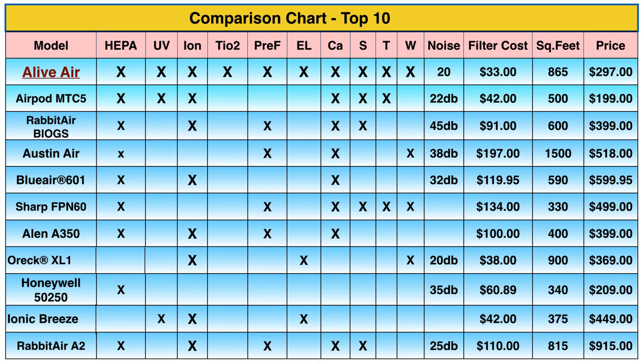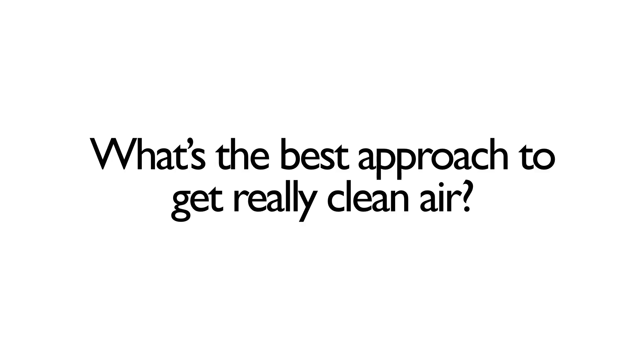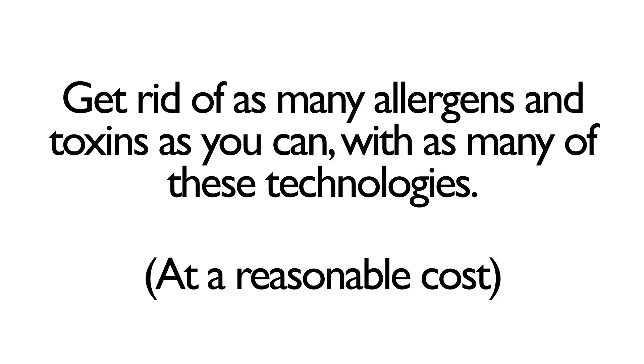Back to the comparison chart — you can see HEPA, UV, ion, TiO2, pre-filter, etc. That gives you an idea of what those technologies do and which ones match your needs. Then you can start comparing filter costs, square footage of the room, and so on, to figure out the best fit for you. To get really clean air, use as many technologies as are available at a reasonable cost.